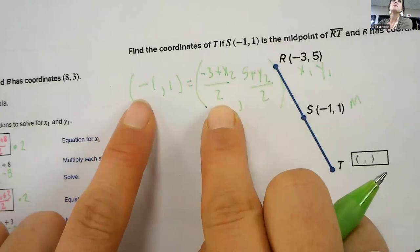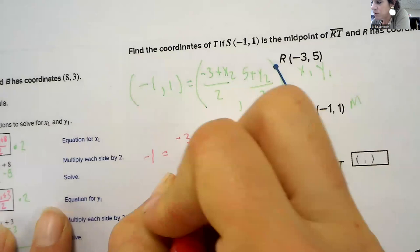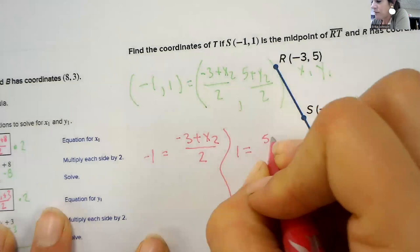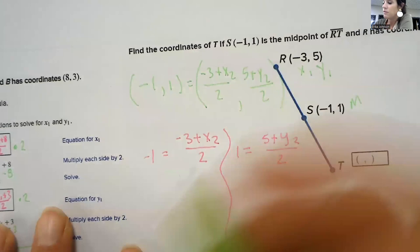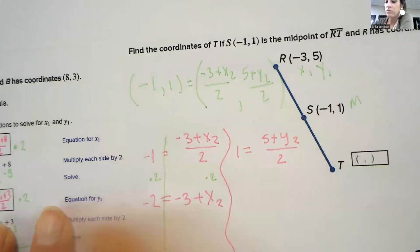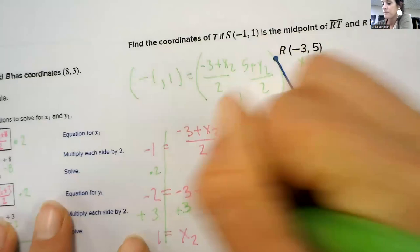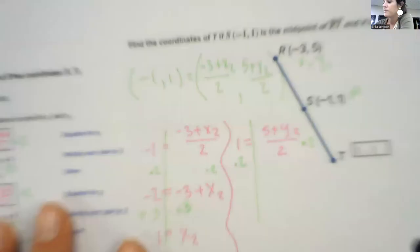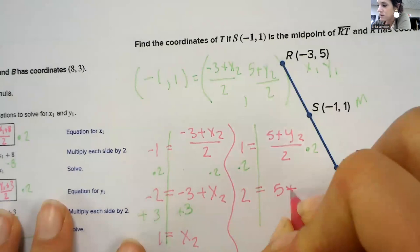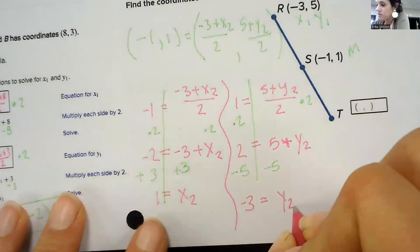We have to solve two equations, because this one equals negative 1, and this one equals positive 1. So we're going to do negative 1 equals negative 3 plus x2 divided by 2. And we're going to do 1 equals 5 plus y2 over 2. Steps are similar. Start out by multiplying by 2 on both sides. So that's going to give me a negative 2 equals negative 3 plus x2. And then add that 3 over. That's going to give me 1 equals x2. And then I have to find y2. So I would multiply by 2 on both sides. That would give me 2 equals 5 plus y2, then subtract 5. So negative 3 is going to equal y2. So my answer for T is going to be 1 negative 3.